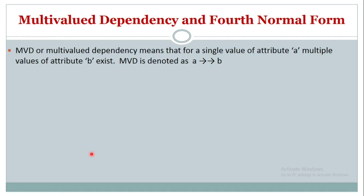Now let us understand about the fourth normal form. Fourth normal form is based on multi-value dependency (MVD). Before understanding the definition of fourth normal form, we'll understand what is multi-value dependency. MVD means that for a single value of attribute A, multiple values of attribute B exist.